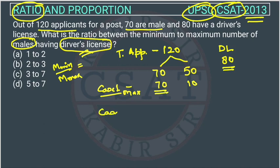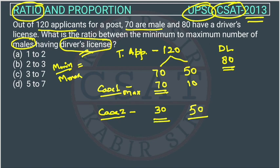Now Case 2: we have to calculate the minimum number of males who can have a driver license. What is the maximum number of women who can have a driver license? All 50. So we give a license to all 50 women. How many driving licenses are remaining? 80 minus 50 is 30. So we are giving this 30 to the males.